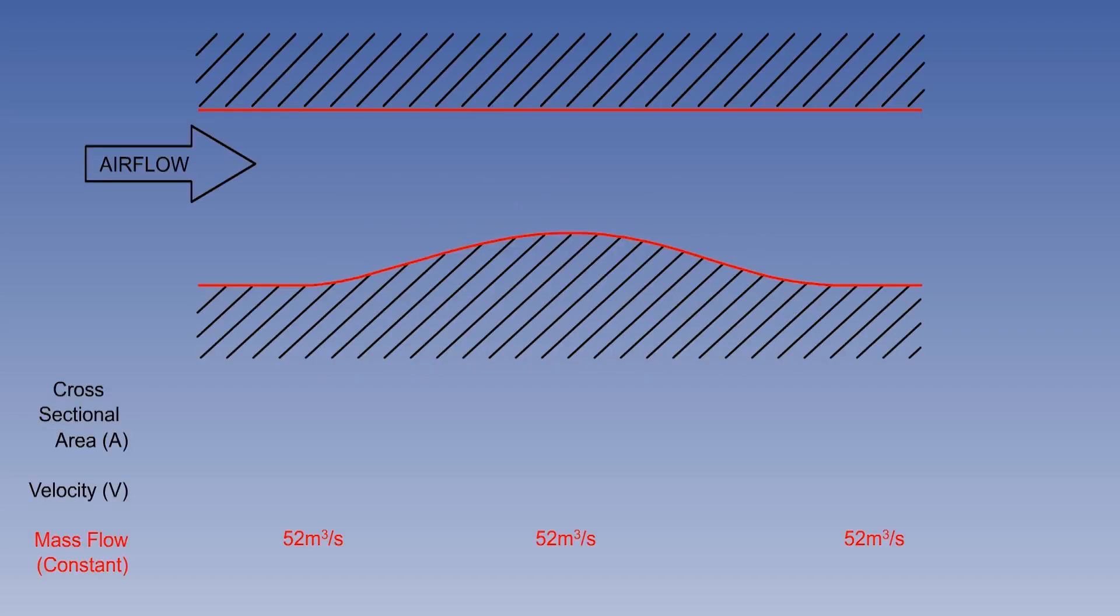This is the basis of the principle of continuity, and to demonstrate its effect on aerodynamic theory, we will consider a stream of air flowing through a tube which has a reduced cross-sectional area in the middle.